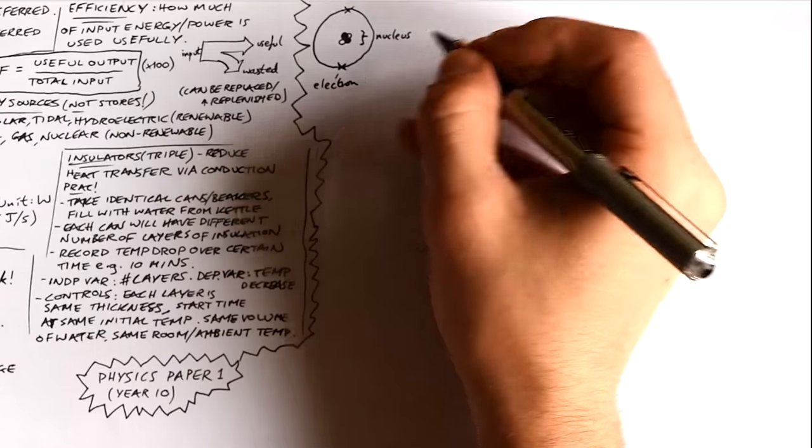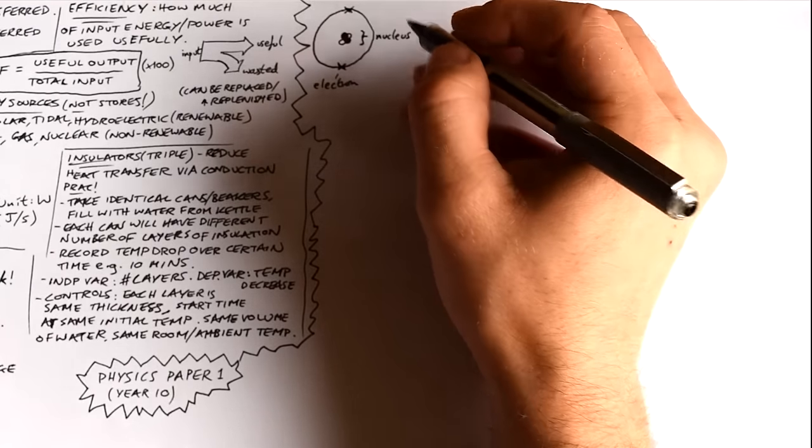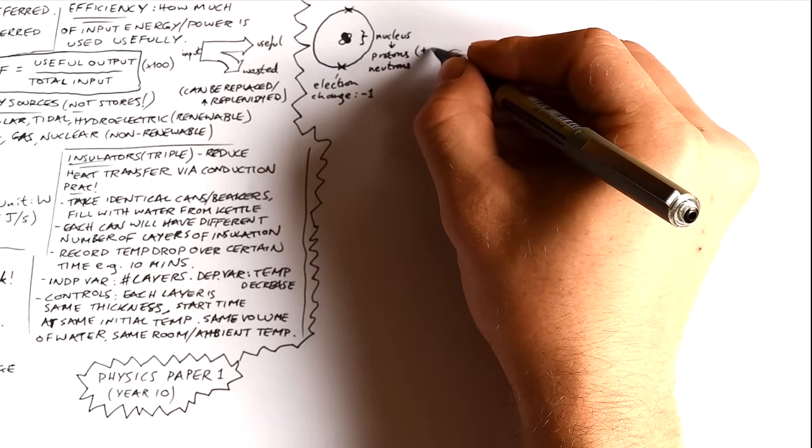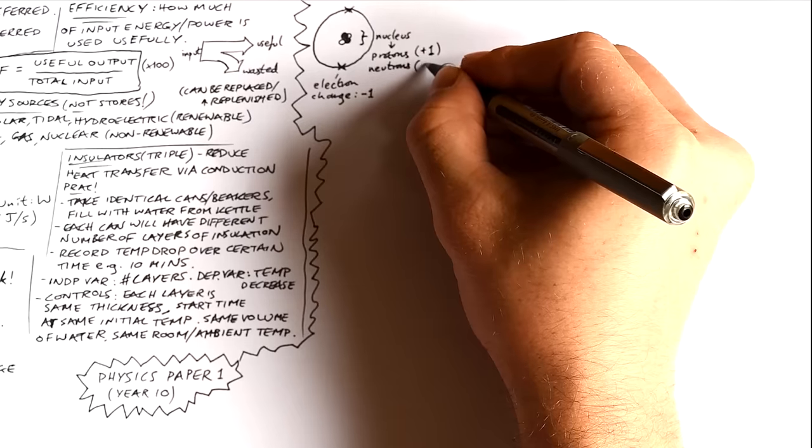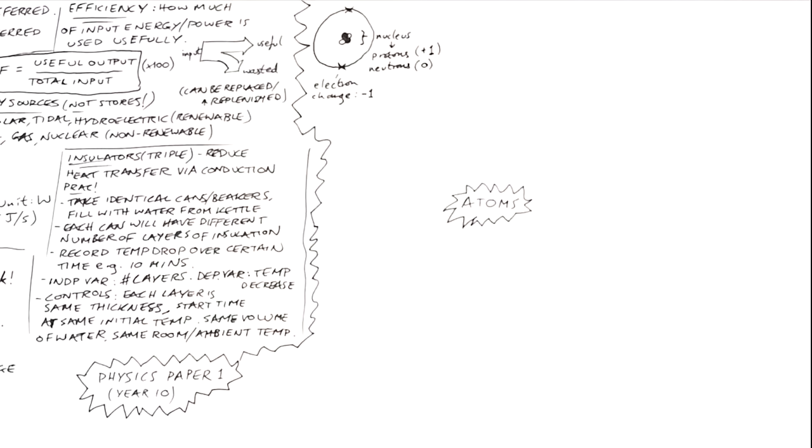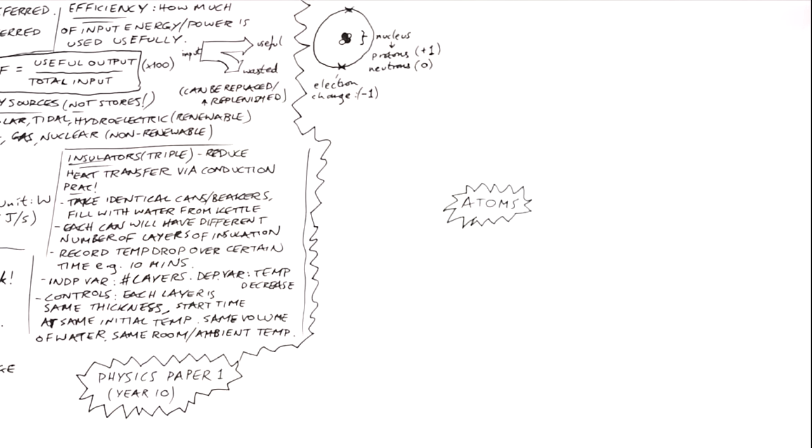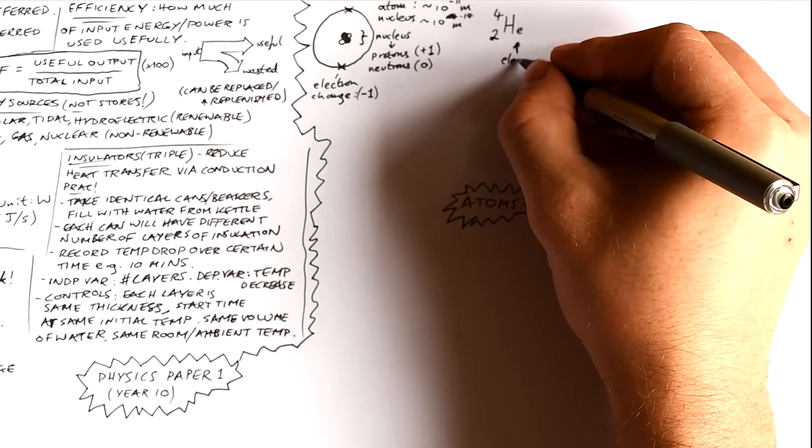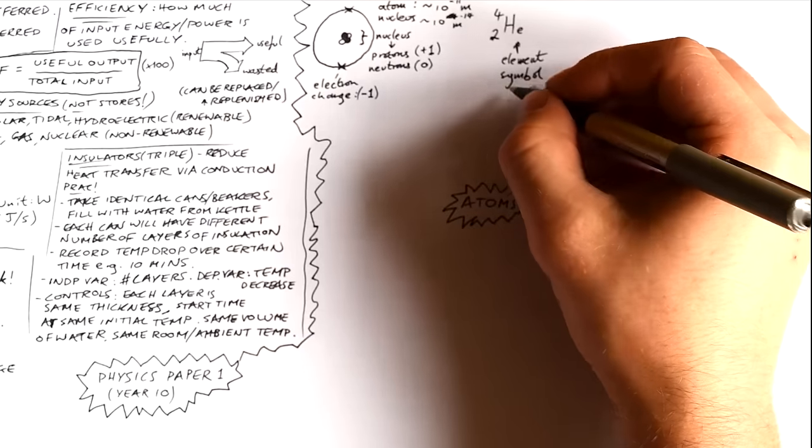Okay, let's look at some atomic structure. Here's your bog standard atom. I'm just going to draw helium. Nice and simple. We have a nucleus in the middle that has protons and neutrons in. And then we have electrons around the outside. Protons have a charge of plus one. Neutrons are neutral, so they have a charge of zero. And electrons have a charge of minus one. We need all the pluses and minuses to balance out, so atoms are neutral, so therefore we need to have the same number of electrons as protons.